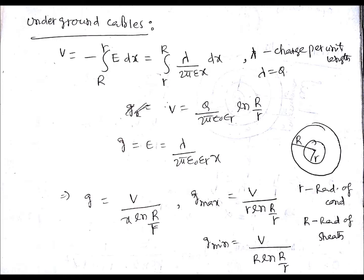For electric field intensity, the formula is Q/(ε₀x²), but here you're not getting that. V equals Q/(2πε₀εᵣ) ln(R/r) after integration.